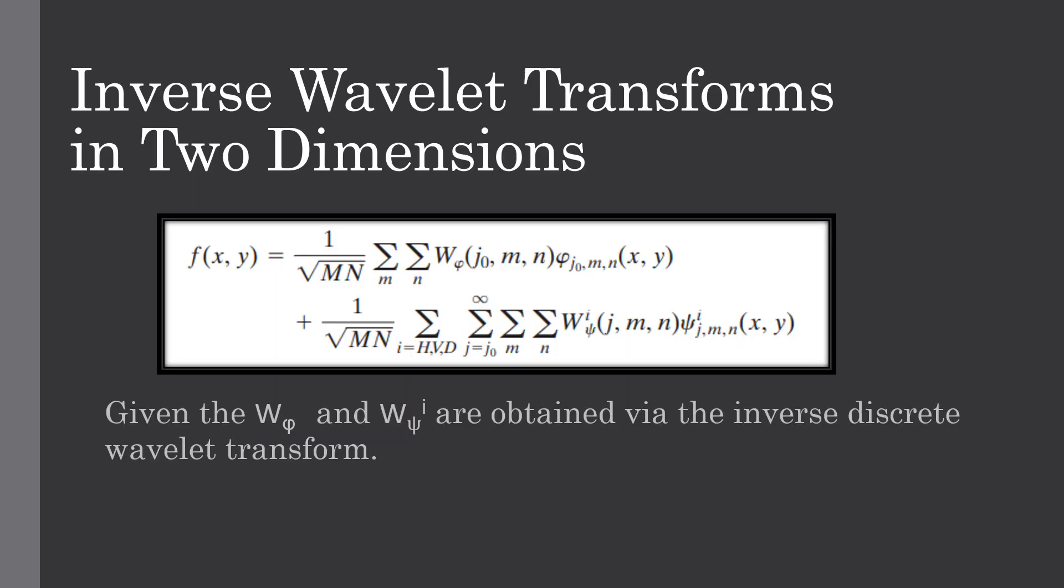We can find the inverse wavelet transform in 2D with this equation when we are provided with the coefficients omega phi and omega psi, which are obtained through inverse discrete wavelet transform.